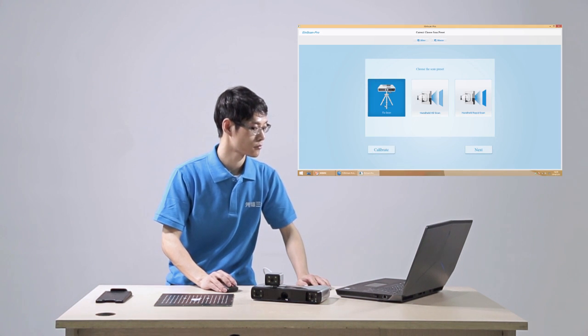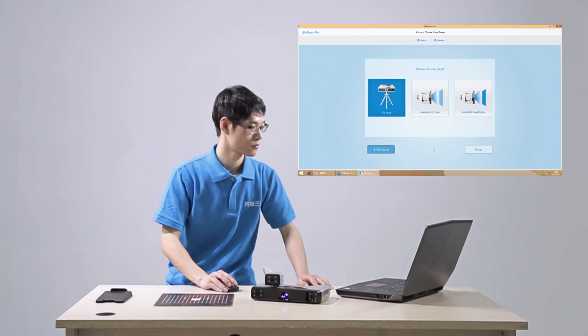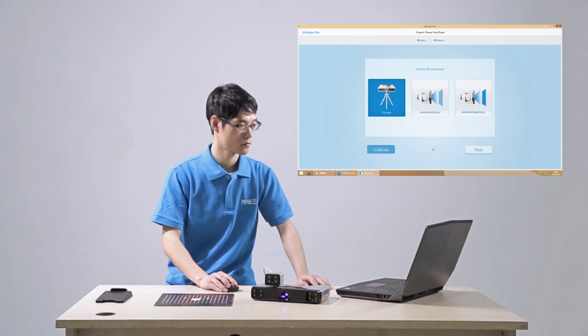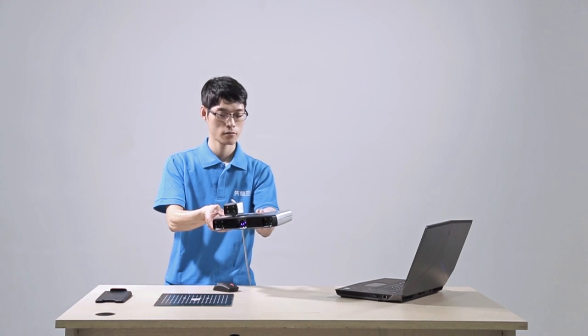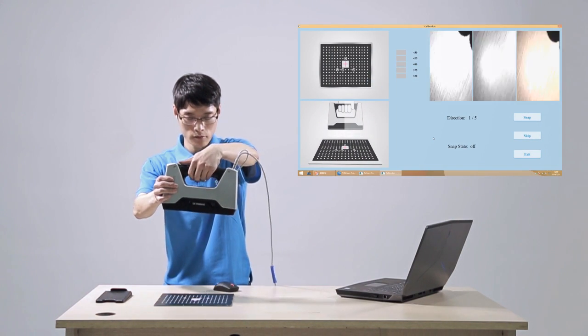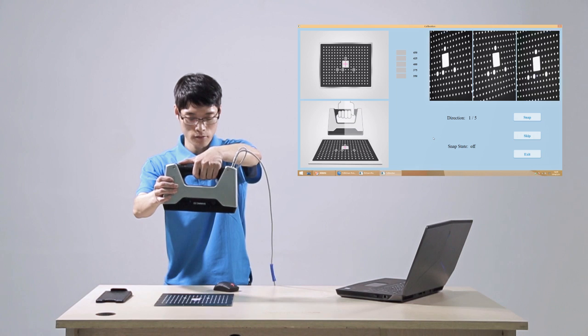Open the software, click calibrate. Following the interface instructions, hold the scanner in your hand and let the color camera side face you. Place the calibration board's position according to the software guidance.